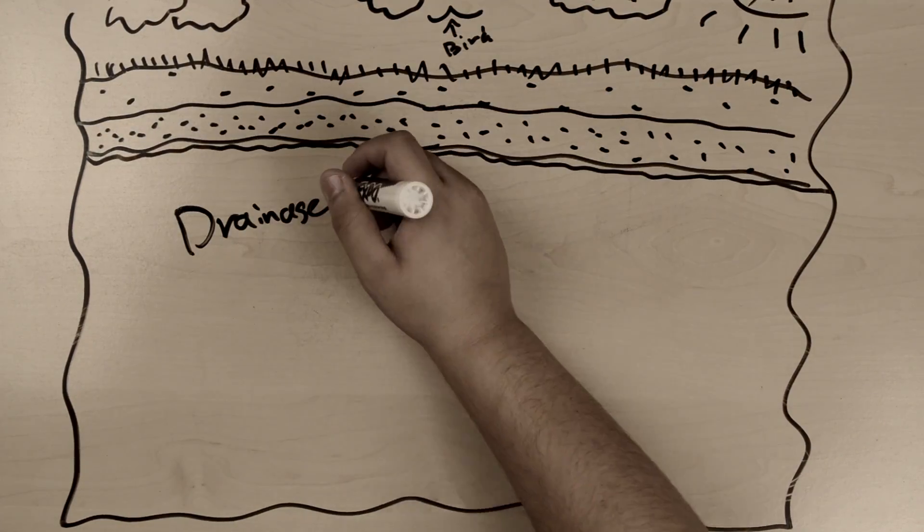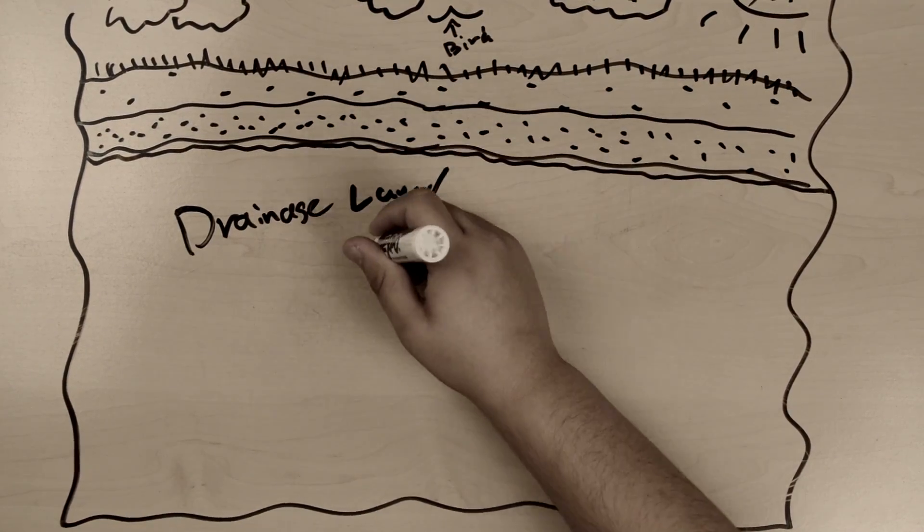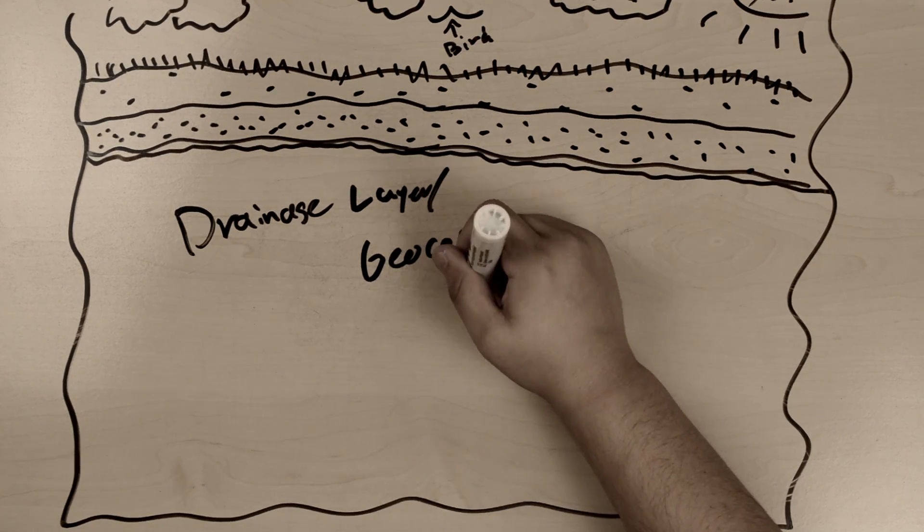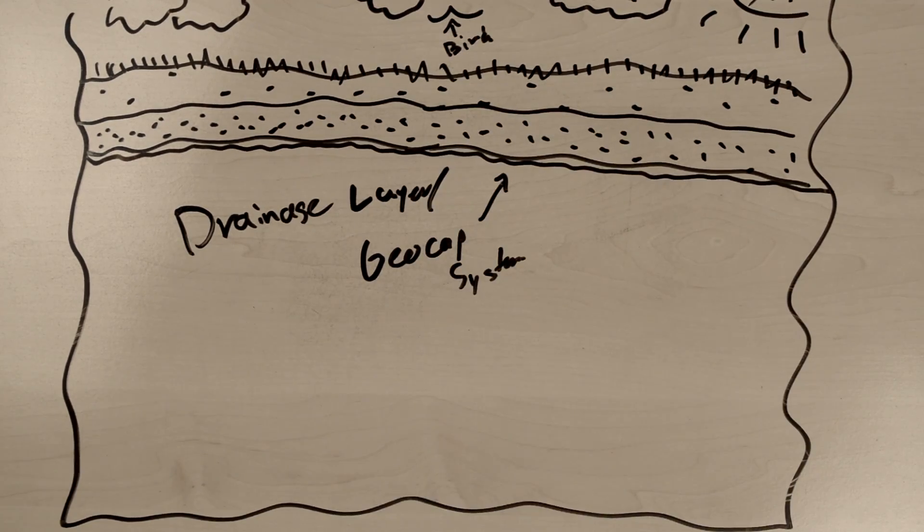Our next layer is a drainage layer and geomembrane system. A layer of sand or gravel or thick plastic mesh called geonet drains excess water from the protective cover soil.